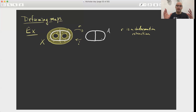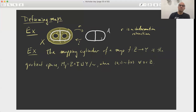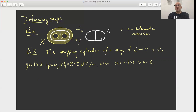That map is homotopic to the identity. A way to make this precise is using the notion of the mapping cylinder, and this is a useful way of constructing deformation retractions in other settings.